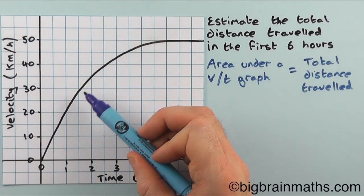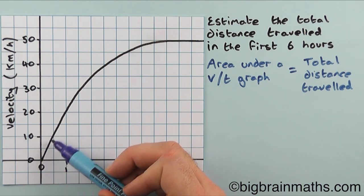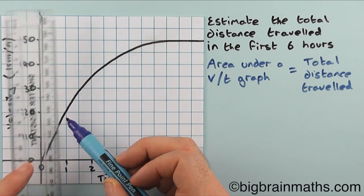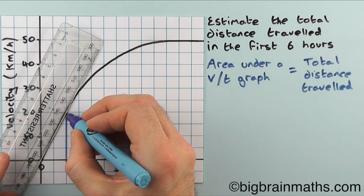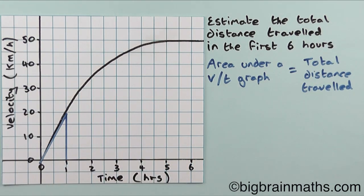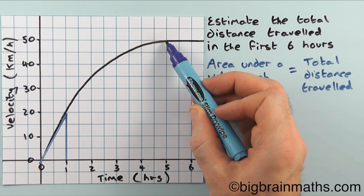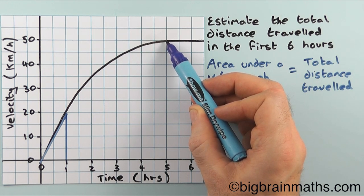All we need to do is estimate the area underneath this velocity-time graph up until six hours. To do this, we're going to break up the area underneath this velocity-time graph into triangles, trapeziums, and rectangles. The first thing I'm going to do is break up the first part into a triangle, starting from this nice point here and drawing a vertical line down and a diagonal line back to the start of the graph. From a certain point onwards the graph is a straight line, so I can break that part up into a rectangle.